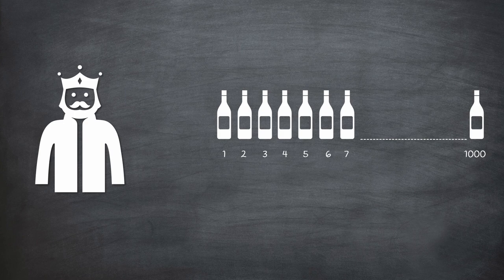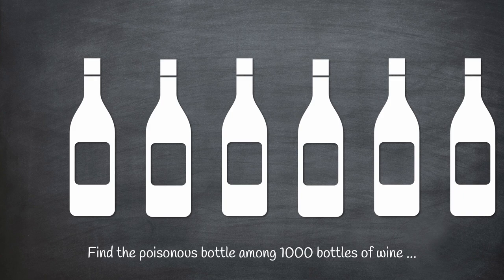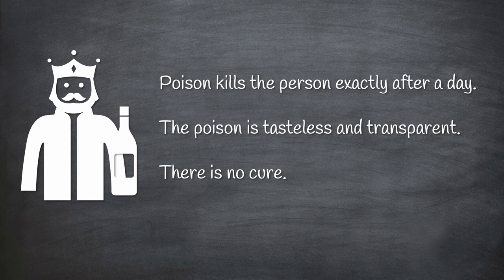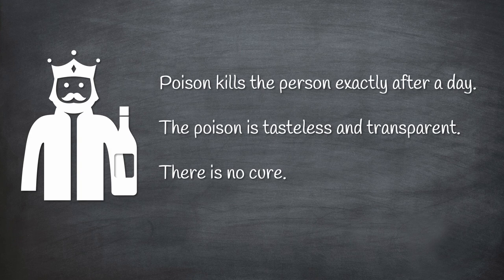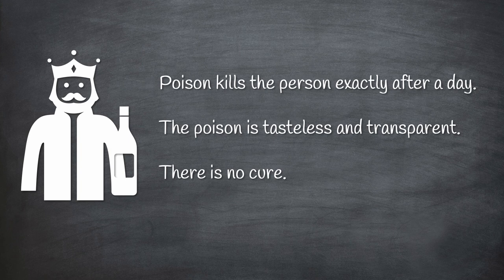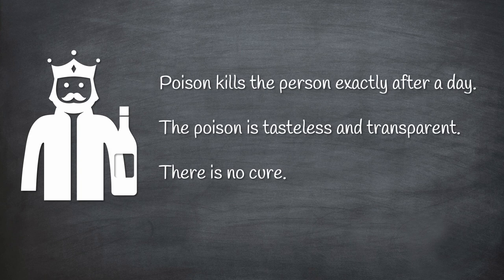The puzzle is to find the poisoned bottle. Of course, there are some constraints too. The poison is designed in a way that it kills a person exactly after 24 hours. This would have given the assassin enough time to leave the kingdom. The poison is also tasteless, odorless and transparent, so that it doesn't show up when the bottle is opened and the wine is poured into a glass. And obviously, there is no cure for this poison.